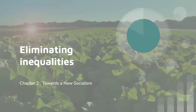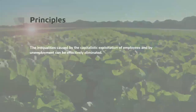This is the video based on the second chapter of Towards a New Socialism, where we present our ideas for how Marxist economics can be used to reduce or eliminate inequalities that exist under capitalism. We're saying that inequality is caused by capitalist exploitation and unemployment can be effectively eliminated.